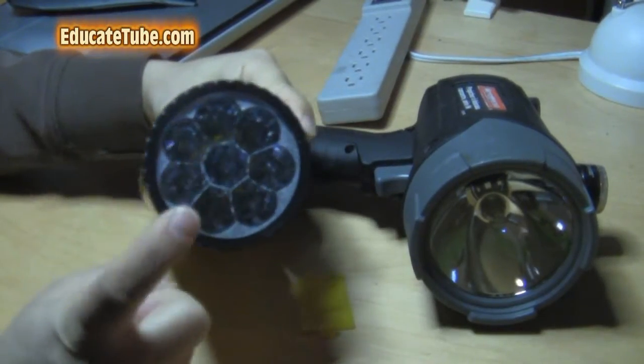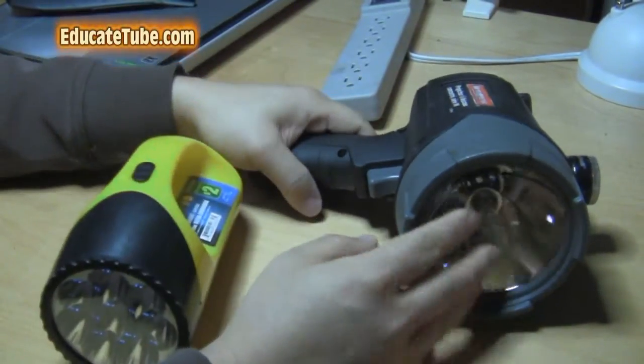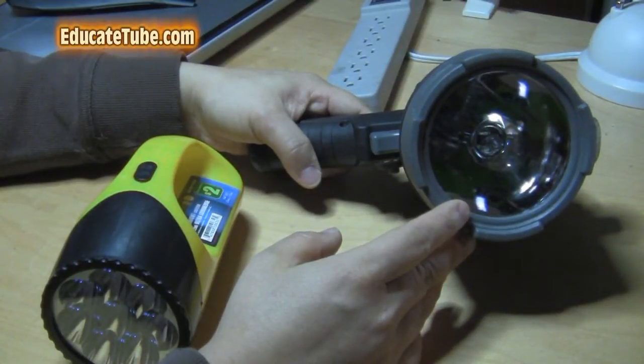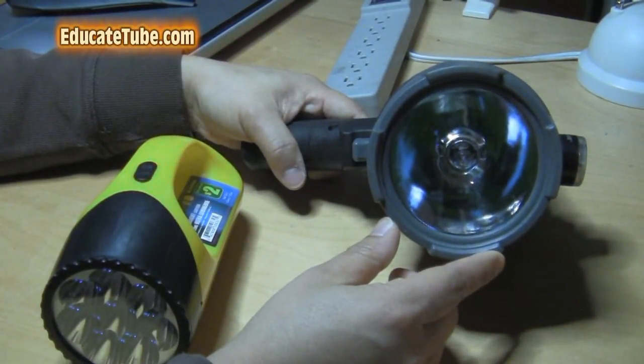So if I can replace this LED light and put it here, what we have now is a very good LED light that runs on a rechargeable sealed lead acid battery. That's what I'm going to do right now. I'll show you how to do it very quickly. Let's get started.